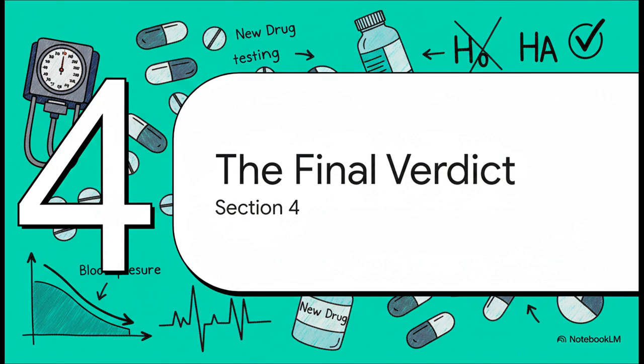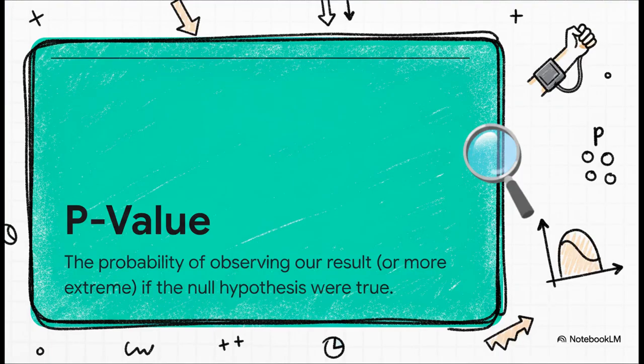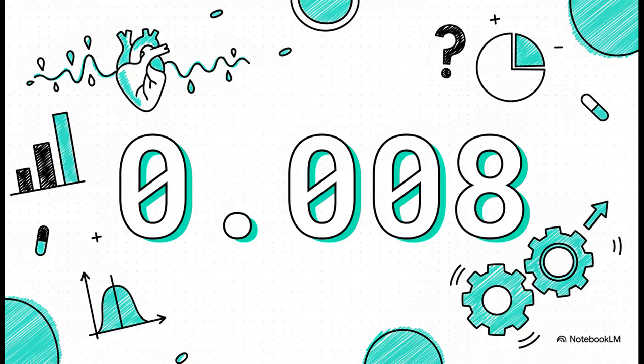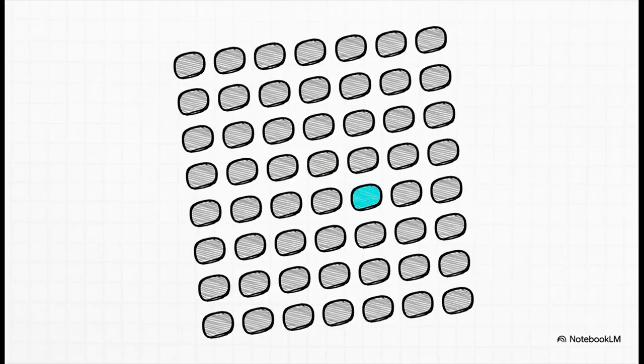The p-value answers one very specific but very powerful question. It asks, if we assume for a moment that this drug is completely useless, what's the exact probability that we would get a result this strong just by dumb luck? So in other words, it's the probability that our result is just a fluke. So, for our t-value of 2.8, the math gives us a corresponding p-value of 0.008. And just look at that number. That is a tiny, tiny number. Let's really put that in perspective. A p-value of 0.008 means there is only a 0.8% chance—that's less than one time in a hundred—that our pharmacist's results are a total accident. The evidence against that no-effect idea is now pretty much overwhelming.